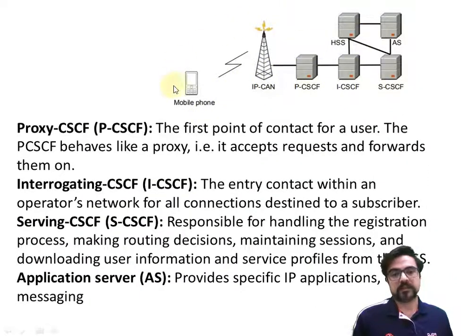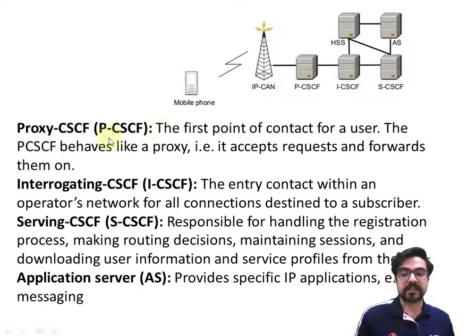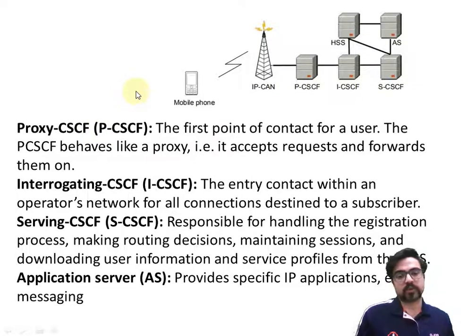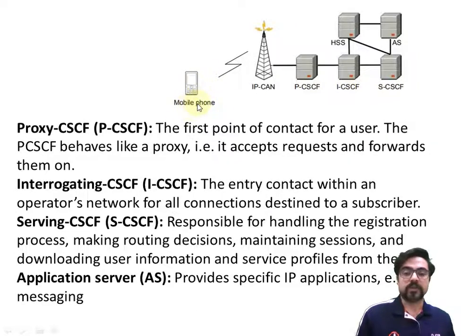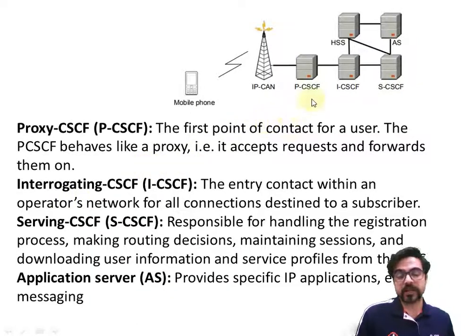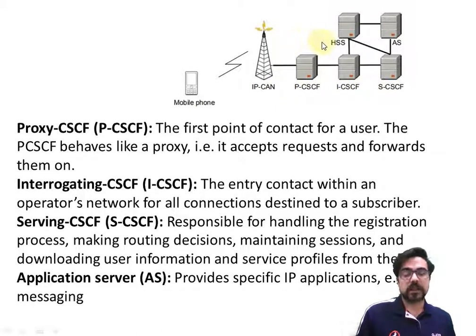From the network perspective, we have an IP connectivity access network. We have PCSCF, which is a proxy — it accepts requests and forwards them. Then we have ICSCF. Whenever there is an originating call from the UE, it first goes towards PCSCF, then ICSCF. For terminating calls, they go directly towards ICSCF.